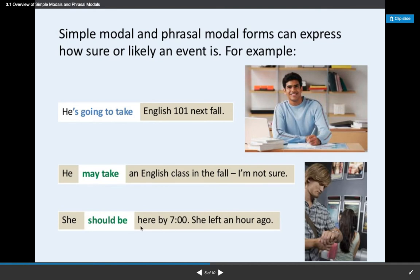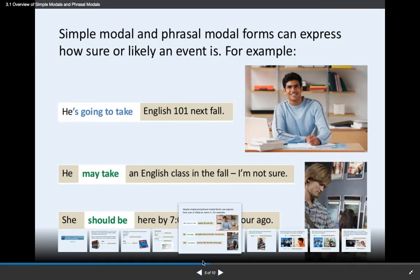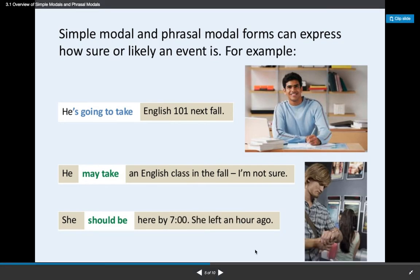She should be here by seven o'clock. She left an hour ago. Here's another way to talk about maybe, and it's confusing because, of course, should gets used in other ways as well. One thing that happens with modals is that they can have different meanings in different contexts. They can have different meanings in different tenses, and it gets confusing.